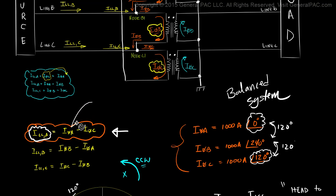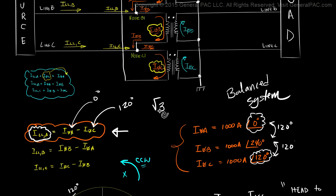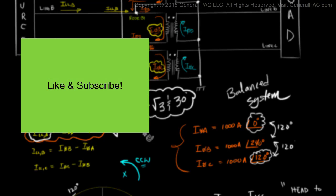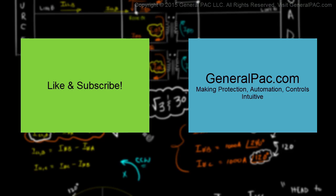It's the angle of phase A current, which is at 0 degrees, and the angle of phase C current, which is at 120 degrees — that's what's causing the square root of 3 times difference and the 30 degrees phase shift between the phase current and the line current. If you like this video, please consider subscribing. This video was brought to you by GeneralPack.com, making power system protection, automation, and controls intuitive.